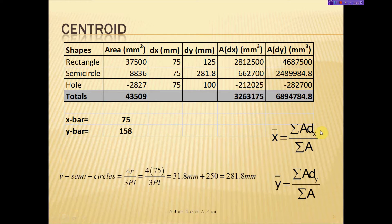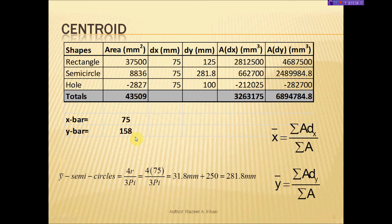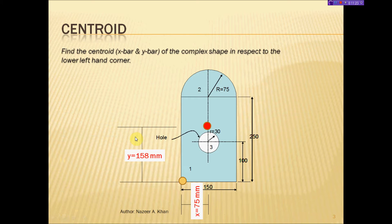Looking at our formula, the summation of A·dx and summation of area (43,509) are the numerator and denominator. When we divide them out, x-bar equals 75 — this proves symmetry, because we could have just taken 150 divided by 2 and recognized it directly. Calculating y-bar gives 158 millimeters. The last step is to update our diagram by placing the centroid of the complex shape at y = 158, dimensioning it accordingly. That concludes this problem.